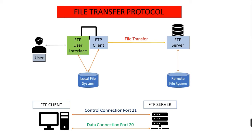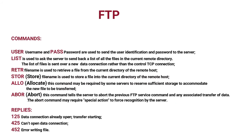The data connections are non-persistent. Commands from client to server and replies from server to client are sent across the control connection in 7-bit ASCII format. Each command consists of four uppercase ASCII characters, some with optional arguments. Some of the more common commands are: USER and PASS, which are used to send the user identification and password to the server; LIST, which is used to ask the server to send back a list of all the files in the current remote directory.